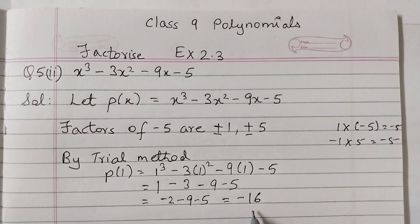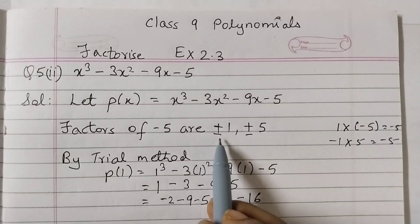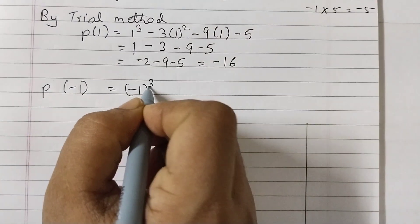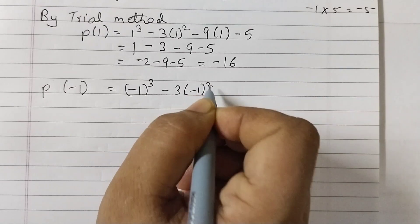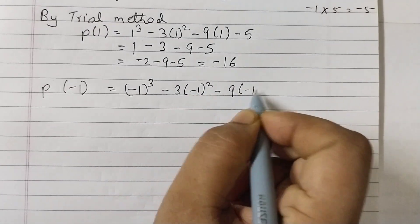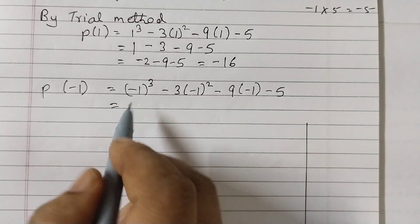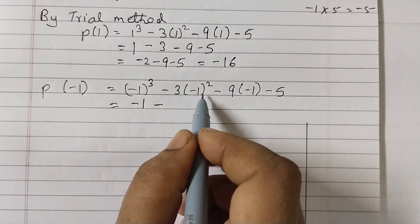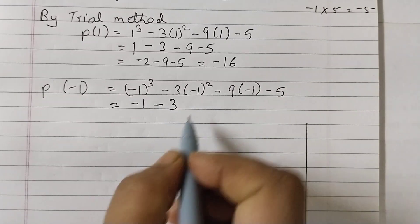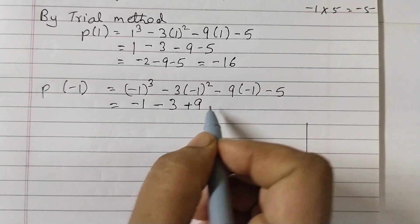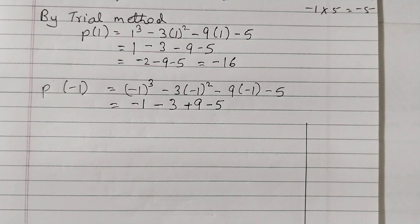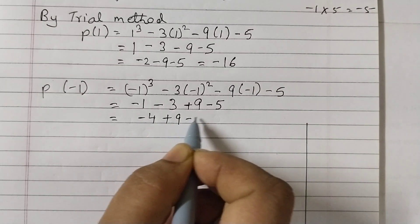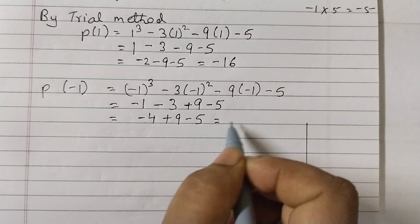So we are not getting a 0 here. So we will try the next factor which is minus 1. P of minus 1 equals minus 1 cubed minus 3, minus 1 squared, minus 9 into minus 1, minus 5. Simplify this: minus 1 minus 3 plus 9 minus 5.